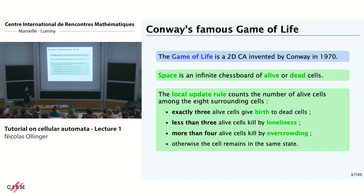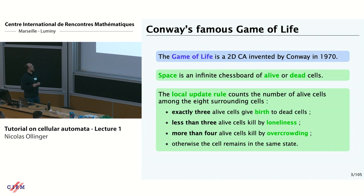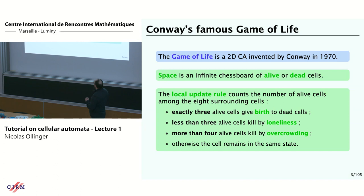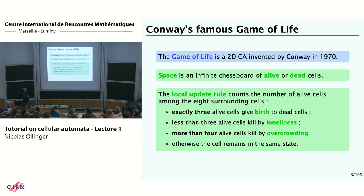In real life, when you have three alive cells together, they give birth to a new cell. When you are alive, you can survive, but sometimes you can also die. You can die because you are lonely and isolated — when you have less than three alive cells around you. You can also die because it's a bit overcrowded: if you have more than four cells around you, you would die. Otherwise, you keep your state.